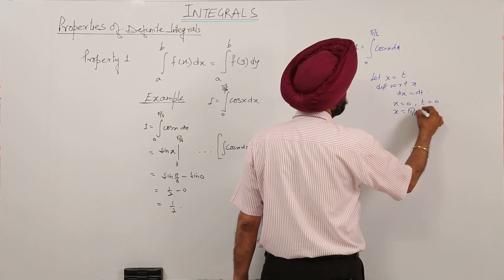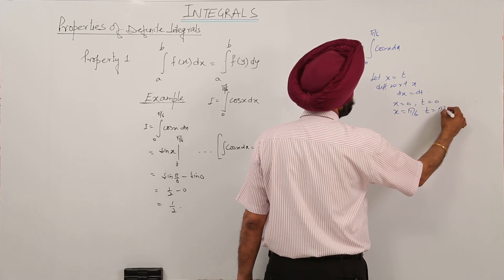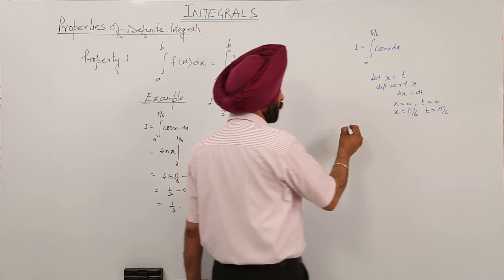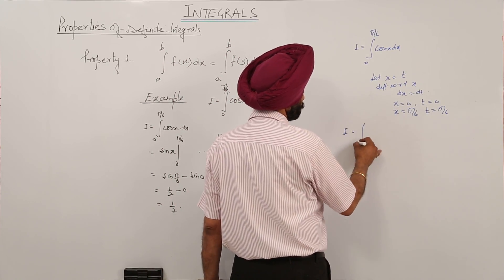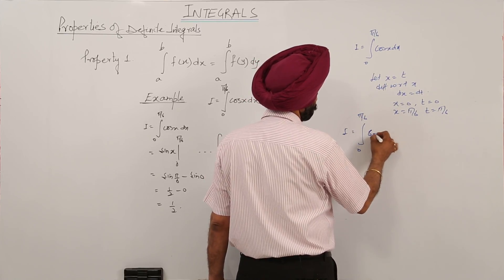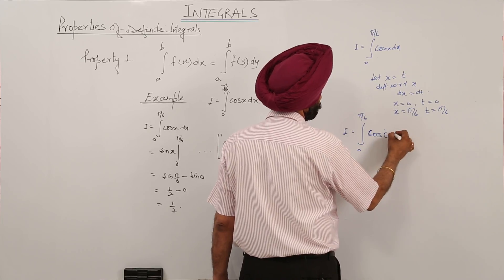When x is equal to pi by 6, t is equal to pi by 6 because x is equal to t. So limits will also be same. Now the question becomes 0 to pi by 6 cos t dt.